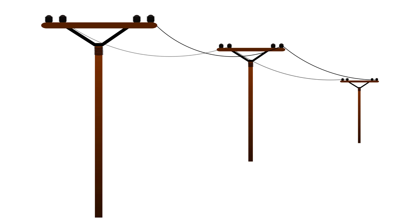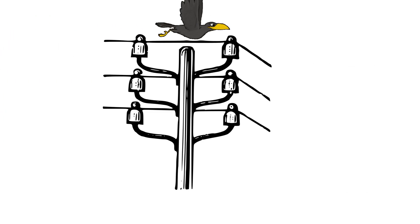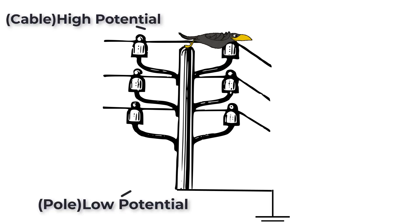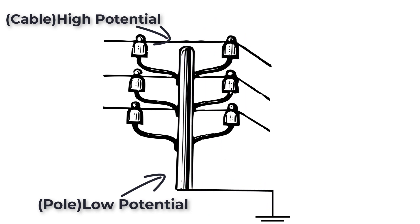So in overhead transmission lines, if birds sit on one wire from the three-phase wires, of course nothing will happen because there is no voltage or potential difference produced. If the bird decided to move and sit on the pole and the tower was not well insulated, the bird could be electrocuted if it touched the tower and the wire at the same time, because the tower has a low potential value, same as the ground.